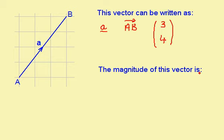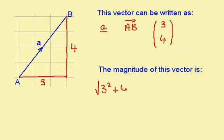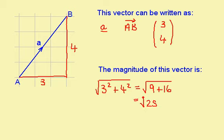The magnitude of this vector is the length of it, and to work this out, I'm going to use Pythagoras' theorem. I can draw a right-angled triangle here. This length is 3, and this is 4, so I now know that the length is the square root of 3 squared plus 4 squared. This is the square root of 9 plus 16, which is the square root of 25, so the magnitude is 5.